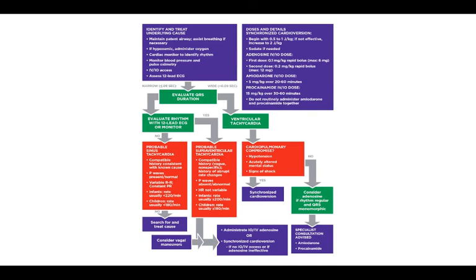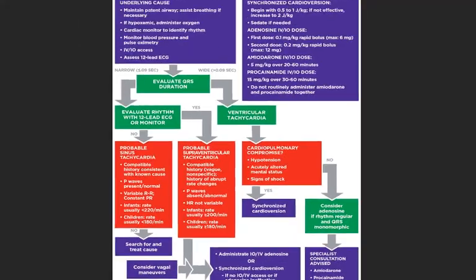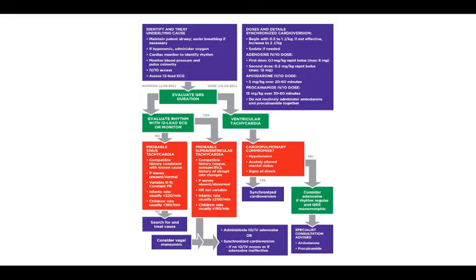Now we are going to go through the PALS algorithm. When we start, you need to identify and treat the underlying cause: maintain a patent airway and assist breathing if necessary. If hypoxemic, administer oxygen. Use a cardiac monitor to identify the rhythm, monitor blood pressure and pulse oximetry, gain IV or IO access, and assess the 12-lead ECG. Then evaluate the QRS duration. If it's narrow, evaluate the rhythm with a 12-lead ECG or monitor. If it's wide, assume ventricular tachycardia and treat.